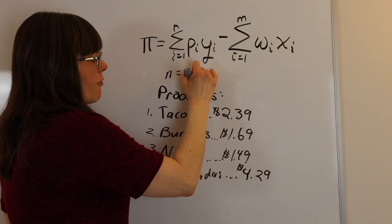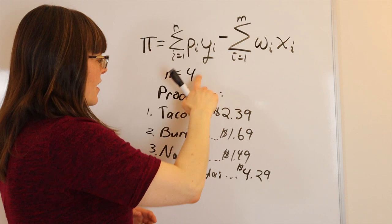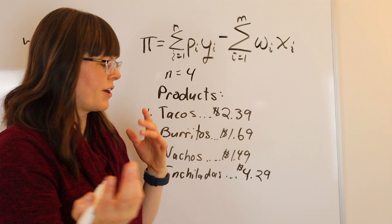So we're going to go through and add up the price of tacos, which is good one, times the quantity of tacos we sell, which might be a hundred tacos in a day, plus the price of burritos, which is $1.69, since that's good two, is burritos, times the quantity of burritos we sell in a day, which is 50 burritos.